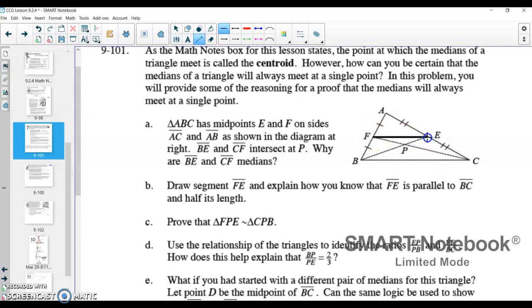There we go. We go from F to E. I make a segment. And then it says, how do we know that FE, that new line, is parallel to BC and half its length?